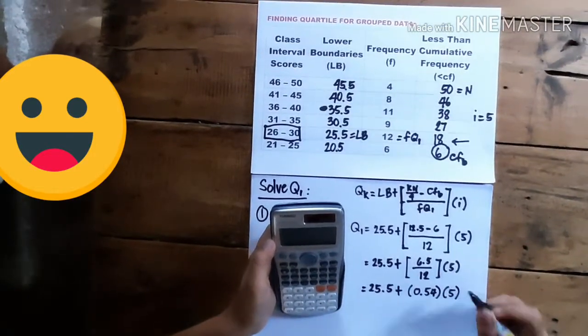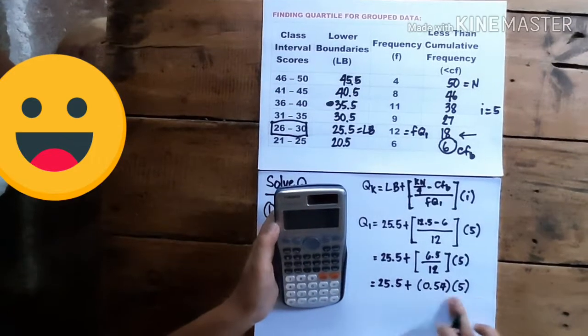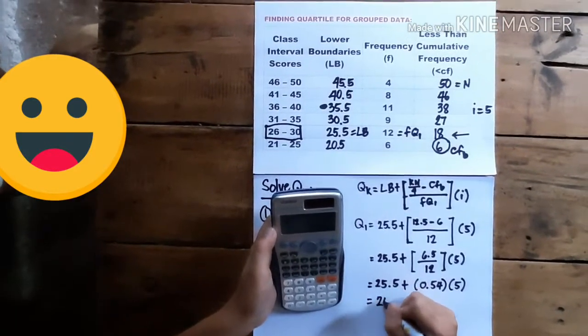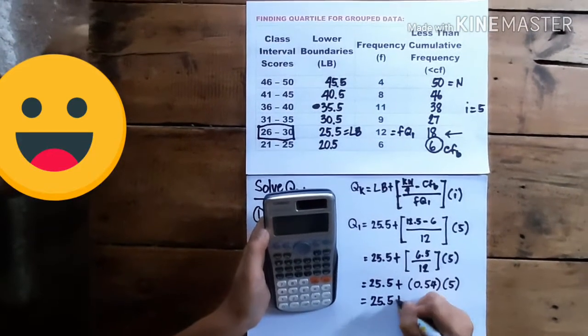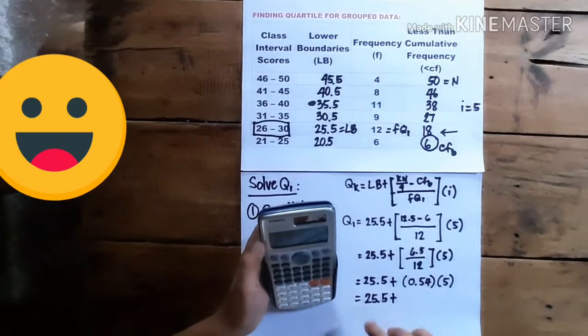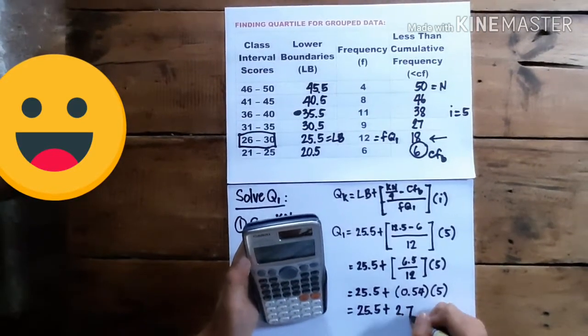And then we have times 5. And, PEMDAS rule, we multiply first. So this is 25.5 plus, 0.54 times 5. And this is 2.7.